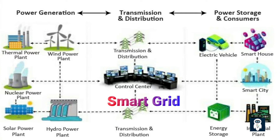One of the key advantages of smart grids is their ability to integrate renewable energy sources, such as solar and wind power. By closely monitoring power flows and demand patterns, smart grids can better manage the intermittent generation of renewables, ensuring a smoother integration into the overall energy mix.